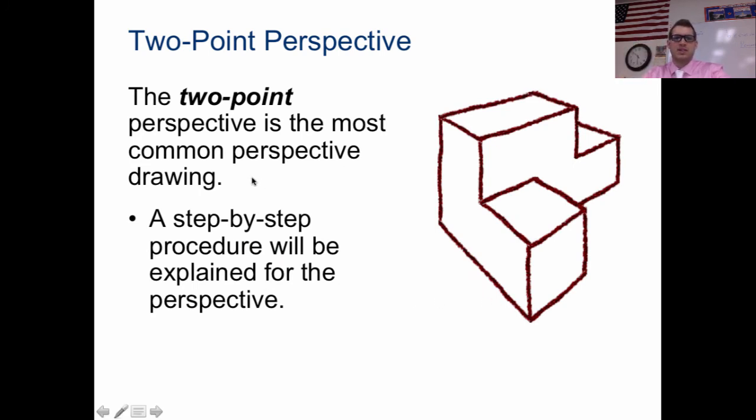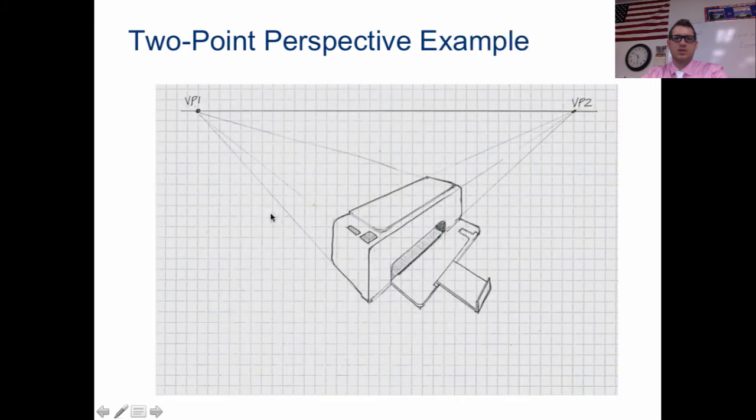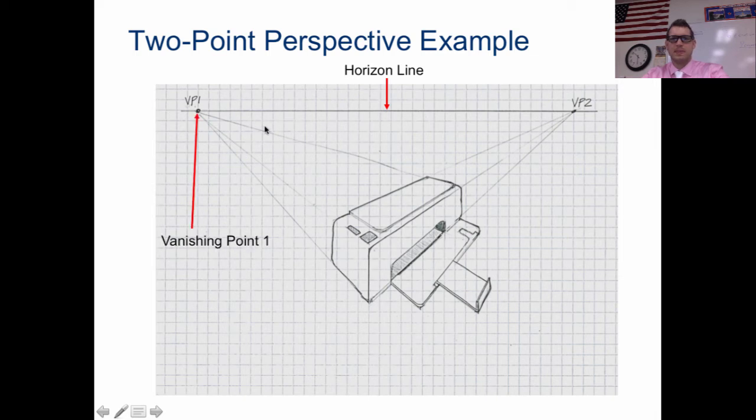So two-point perspectives. Okay, a step-by-step procedure. Let's talk about this. You have two points here. This is the horizon line, and then these are the two different vanishing points.